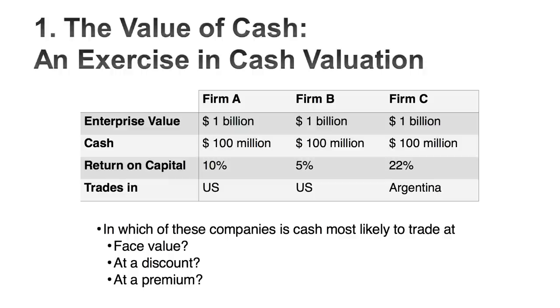For Company A, cash doesn't hurt you and doesn't help you — it's worth exactly what you see. For Company B, where I'm most likely to discount the cash: it has a bad track record. It's not the cash itself that worries you, it's what the managers will do with it — I call it a 'stupidity discount.' For Company C, the emerging market company, I might attach a premium because it has a good track record and in emerging markets capital markets often shut down, allowing cash to be used as a strategic weapon.